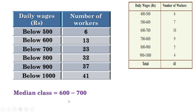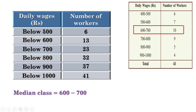We have seen the median is in the range 600 to 700. How can we find it exactly? There are 10 workers in the median class. We can divide the 100 rupees from 600 to 700 into 10 equal parts and assume each subdivision contains exactly one worker. Since below 600 there are 13 workers, the 14th worker is the first worker in the median class, located in the subdivision 600 to 610.